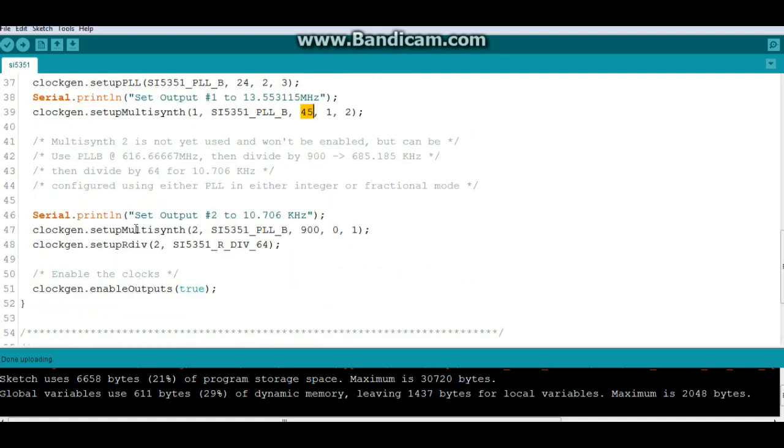Then we also have our output number 2 which is just set to an integer mode 10.706 kilohertz and you can see the commands are the same as we did for output 0. And our ClockGen Enable Outputs True that turns it on and you can put ClockGen Enable Outputs False and that will turn it off. Alright let's go take a look at it in action.